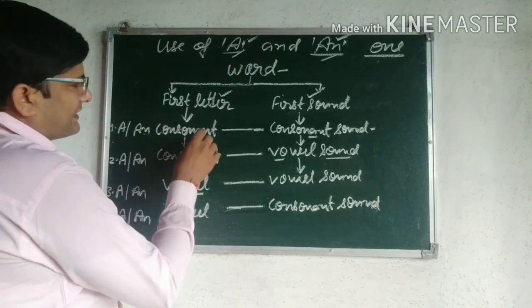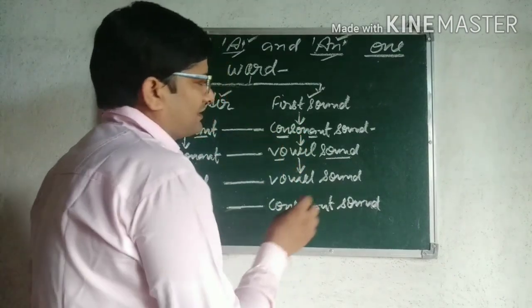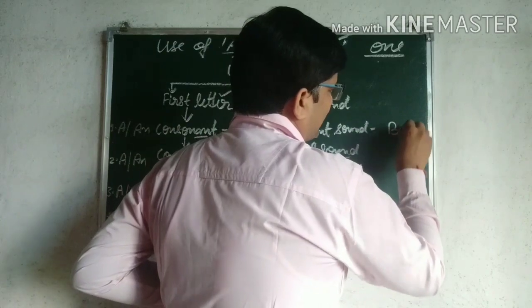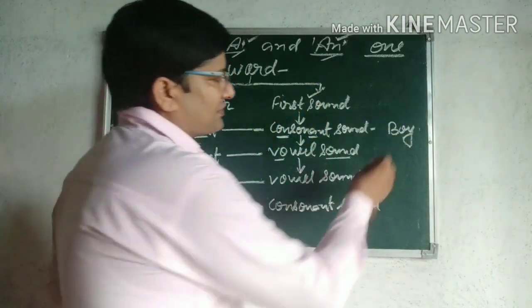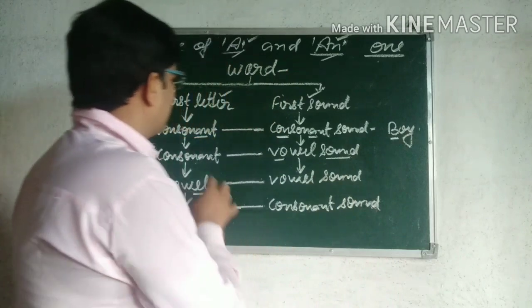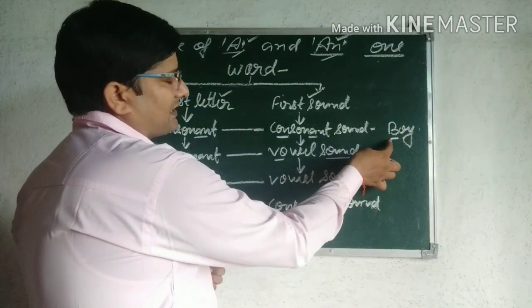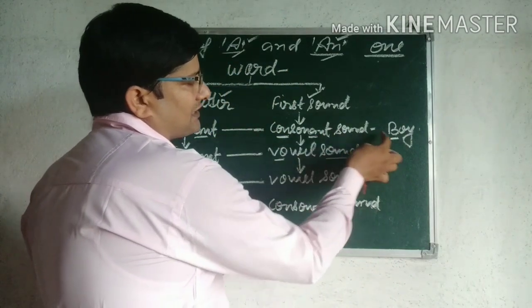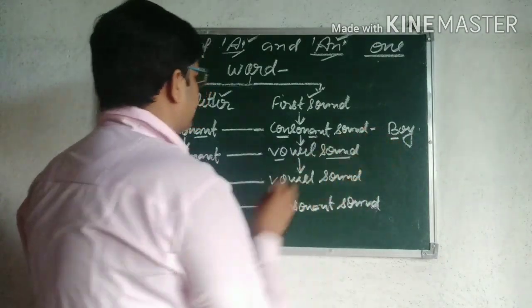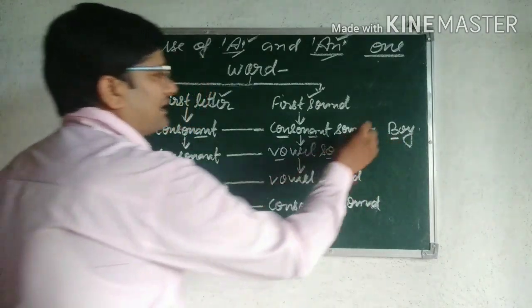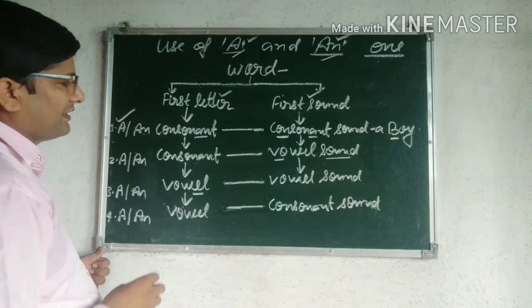Suppose there is any word — उस word का first letter और first sound, इन दोनों में महत्त्वपूर्ण first sound है जो decide करेगा कि हमें A use करना है या An. Case 1: First letter consonant, first sound भी consonant. Example — 'boy': B आपका consonant है, first letter consonant है और first sound भी consonant है. ऐसी condition में इसके पहले A article ही use होगा.